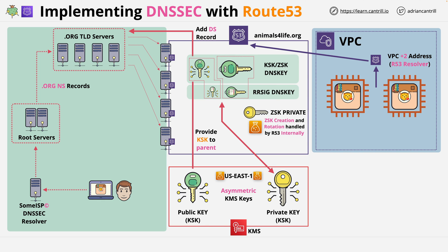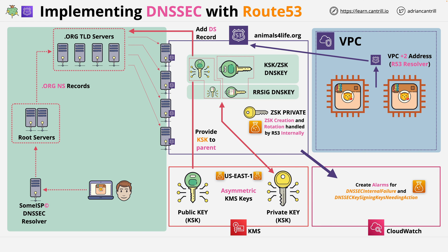As part of enabling this, you should also configure CloudWatch alarms — specifically, create alarms for DNSSEC internal failure and DNSSEC key signing keys needing action. Both of these indicate a DNSSEC issue with the zone which needs to be resolved urgently, either an issue with the key signing key itself or a problem interacting with KMS.